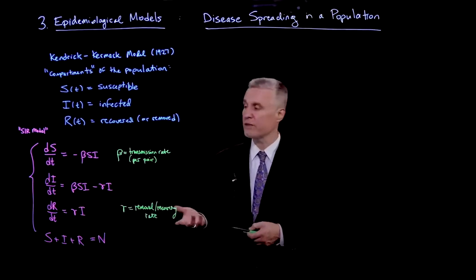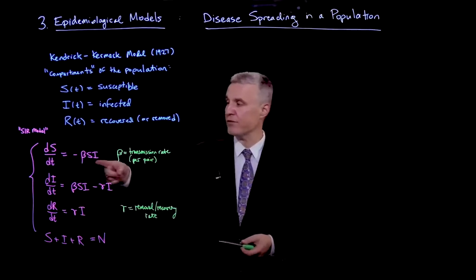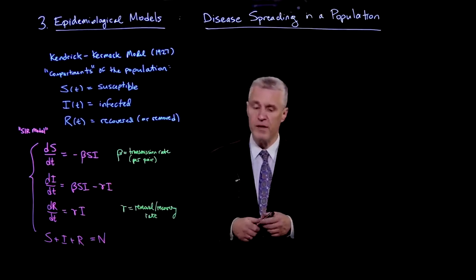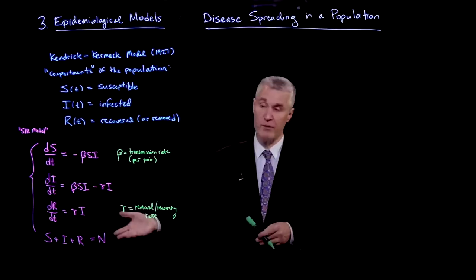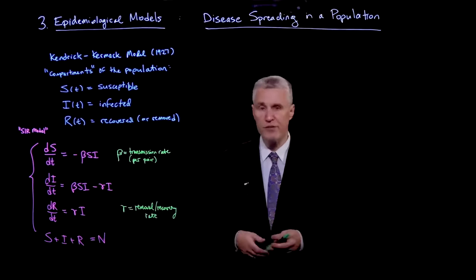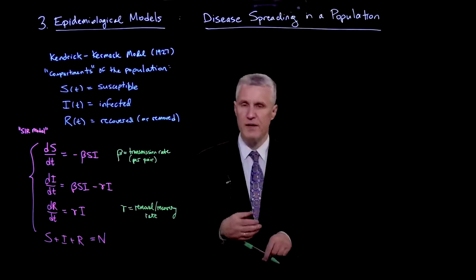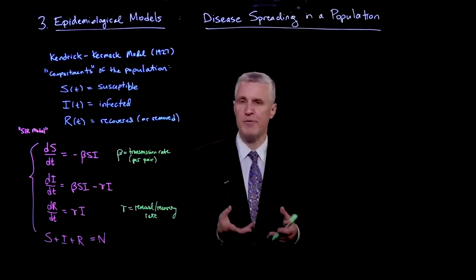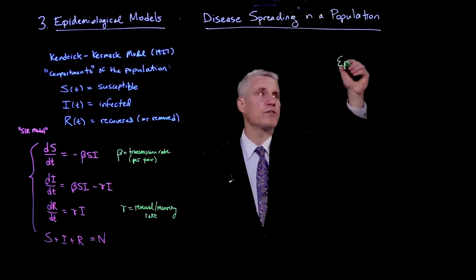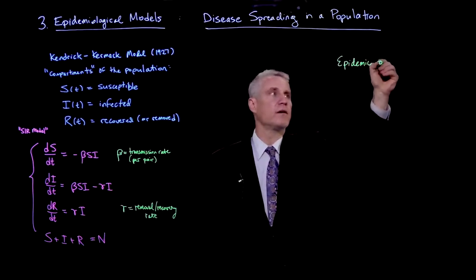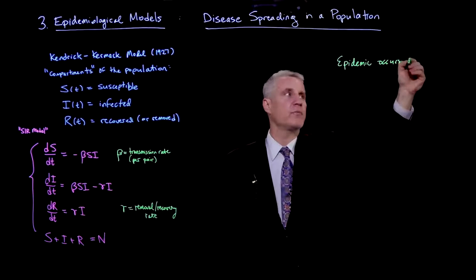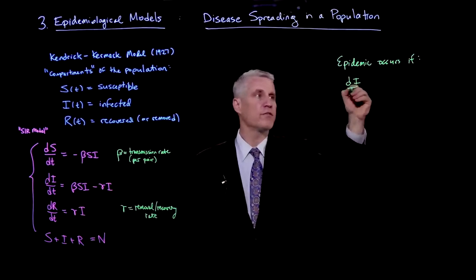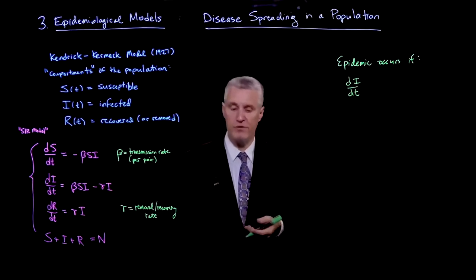This is a simple but non-trivial model. It's non-linear because of the product of S and I, so it's not easy to write down an exact solution. More complicated models exist and are even harder to solve analytically. But we can still get a lot of insight from this model — primarily whether or not an epidemic will occur. An epidemic will occur if dI/dt is positive, meaning the number of infected people is growing, which needs to happen in the early stages.